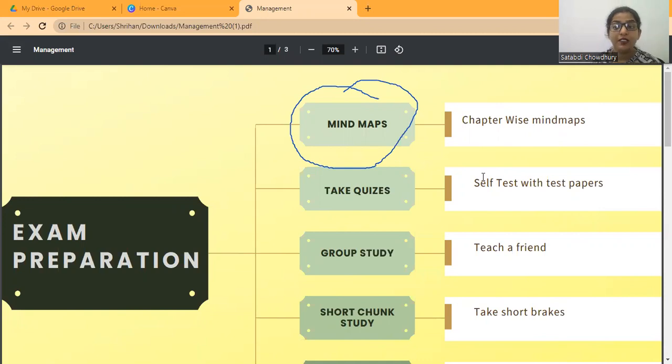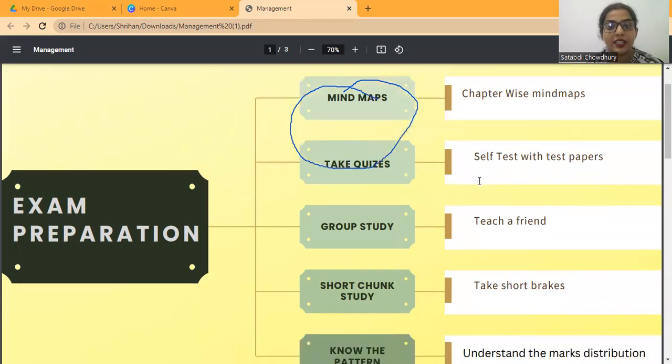Before that, let me ask you something. There are certain incidents which happened long ago but still we remember them, and there are certain things which happened very recently, like you kept something somewhere and we forget that. So what is the reason behind that? Why do you think that happens? This is scientifically proven - we remember all those things which have connecting thoughts or connecting incidents with them. Similarly, mind maps will help us to remember our topics.